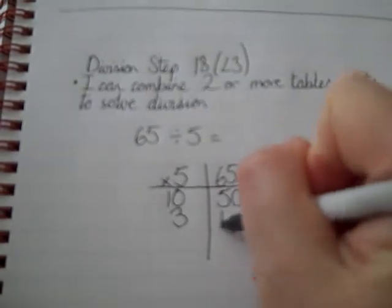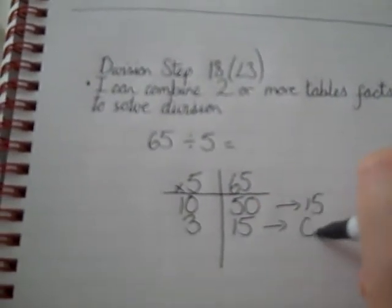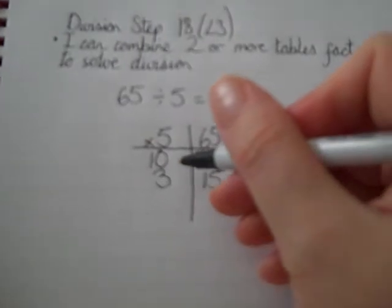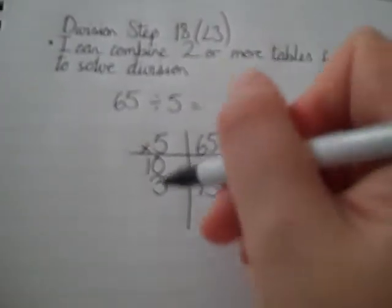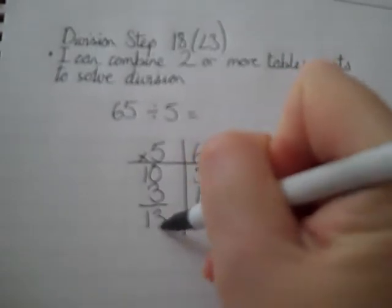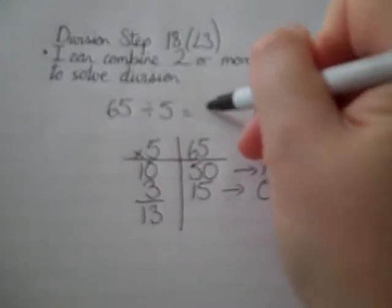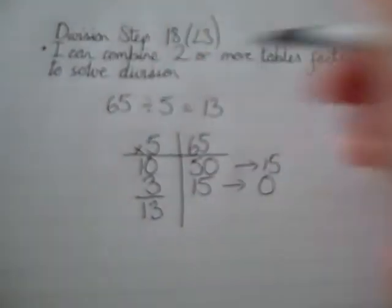3 5s of 15, which would leave us with nothing. So 10 5s and 3 5s makes 65. So 13, 10 add 3, 13 5s makes 65.